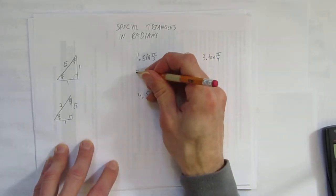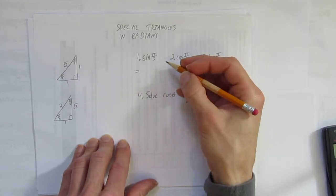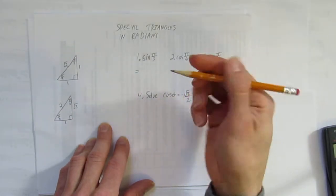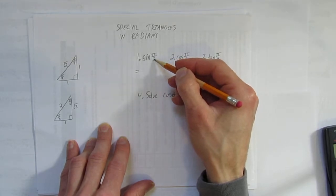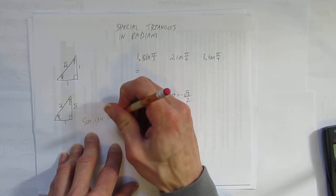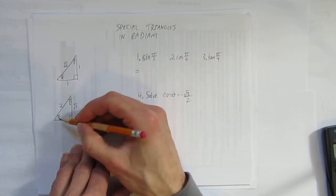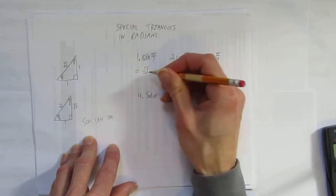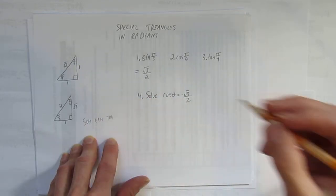That gives us what we need to start working with special triangles in radians. You'll be asked to solve for an exact value — don't use your calculator, because the question expects you to use special triangles. For example, sine of pi over 3: go to your special triangle and use SOHCAHTOA. Sine is opposite over hypotenuse. Go to pi over 3, take the opposite — that's root 3 — over the hypotenuse, which is 2.